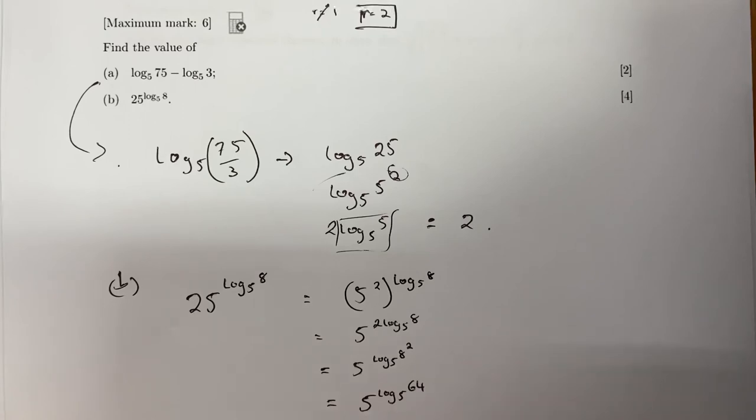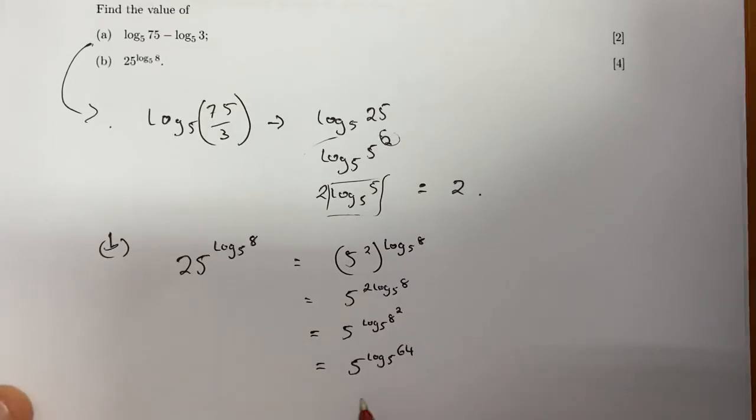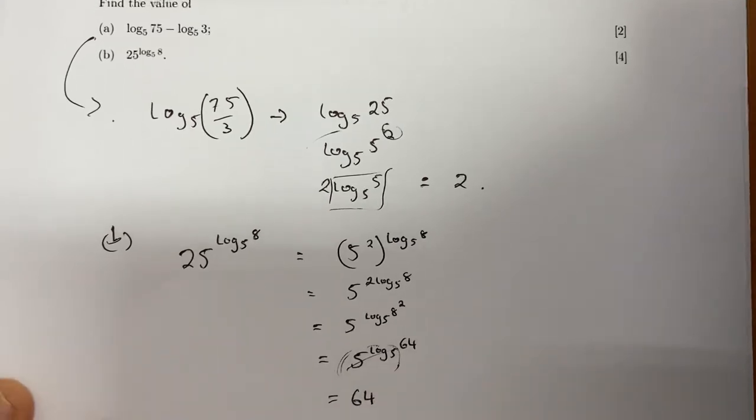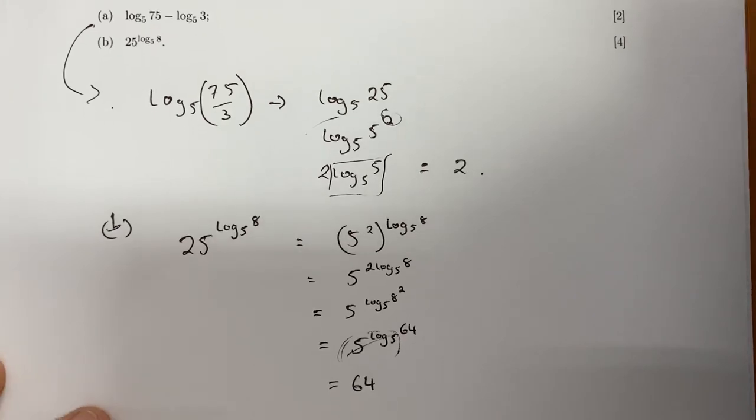So we have one of those situations where 5^(log₅...) just equals one - the base 5 and log base 5 kind of cancel each other out, and we're just left with 64. That's from the rules - you can find those in your formula booklet, or if you're not entirely sure, you might need to review them.